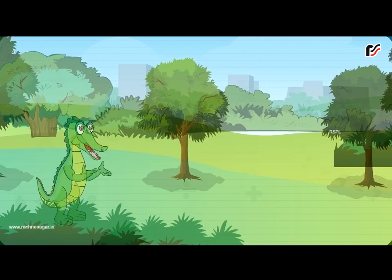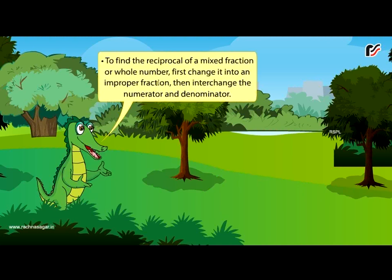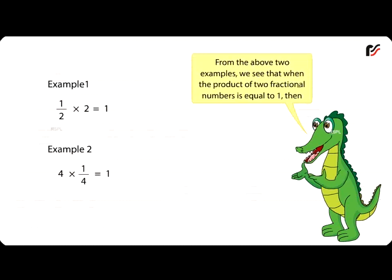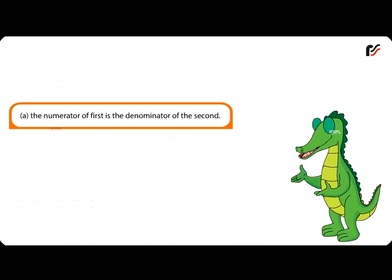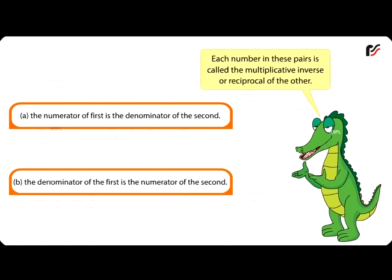Multiplicative inverse. To find the multiplicative inverse of a proper or improper fraction, interchange the numerator and denominator. To find the reciprocal of a mixed fraction or whole number, first change it into an improper fraction, then interchange the numerator and denominator. For example, 1 by 2 multiplied by 2 equals 1, and 4 multiplied by 1 by 4 equals 1. When the product of two fractional numbers equals 1, the numerator of the first is the denominator of the second, and vice versa. Each number in these pairs is called the multiplicative inverse or reciprocal of the other.